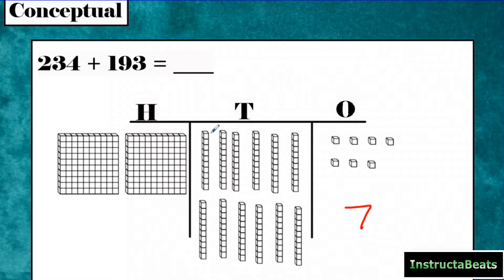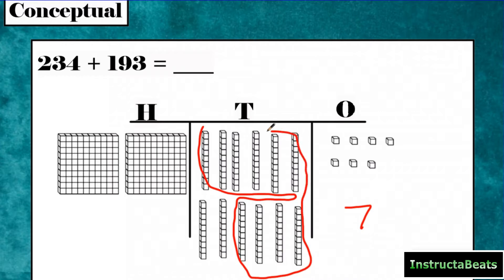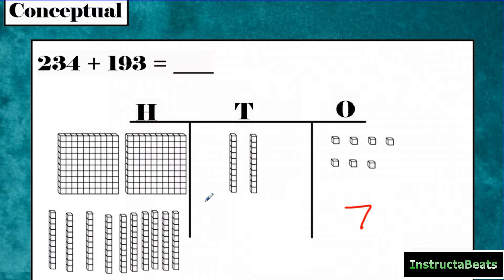We have to bundle up 10 10s. So I'm going to bundle these up, count out 10 of them, and repackage them to give to my 100s place. Because I can't have more than 10 in a place value. You can see that I have 10 10s here, and I'm left with a 2 in the 10s place. So I just bundled them together — we call that regrouping. We gave them to the 100s place.